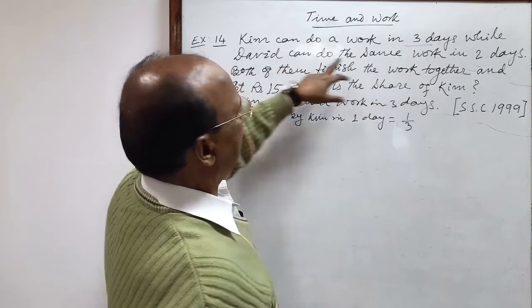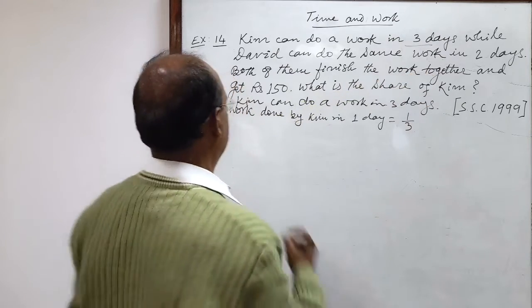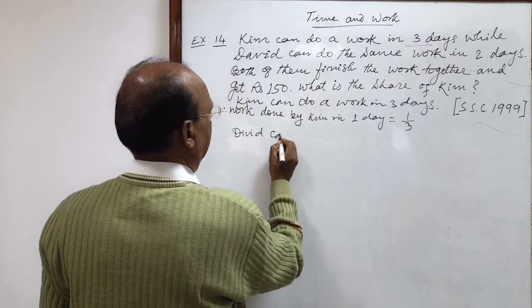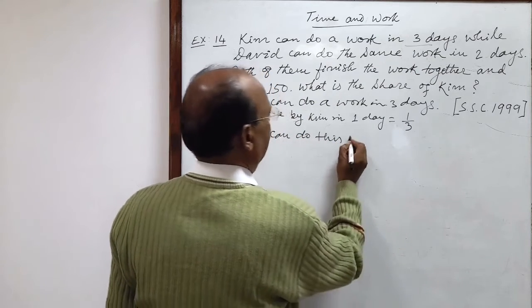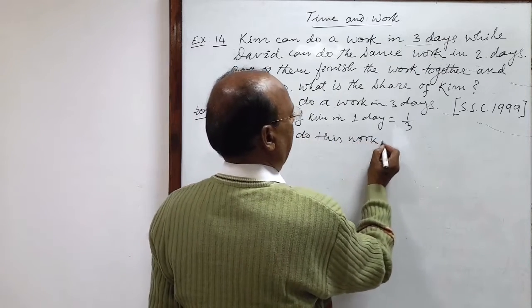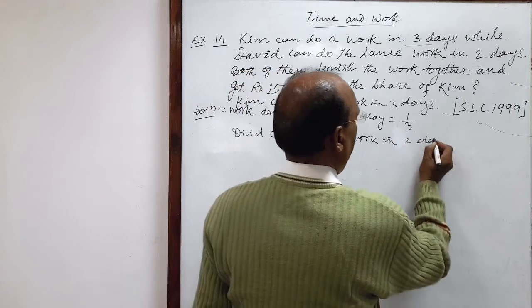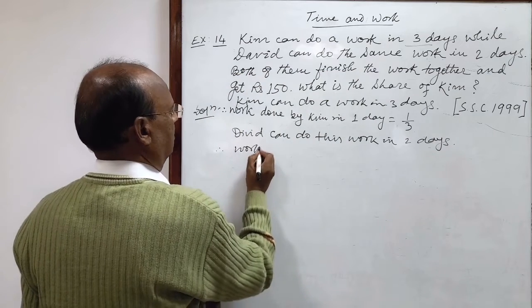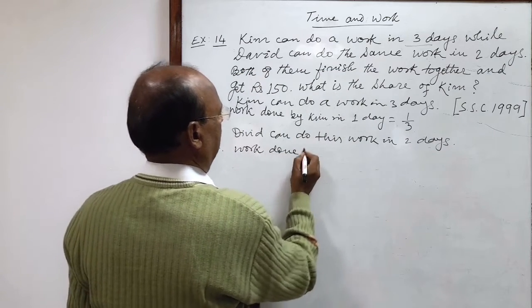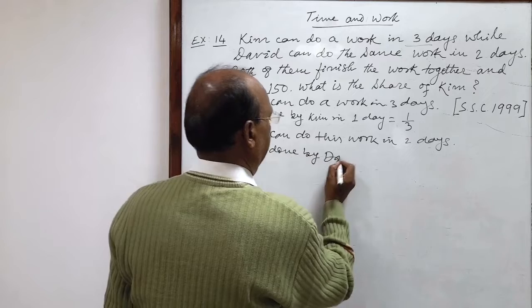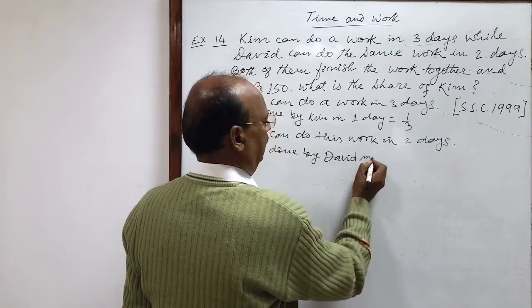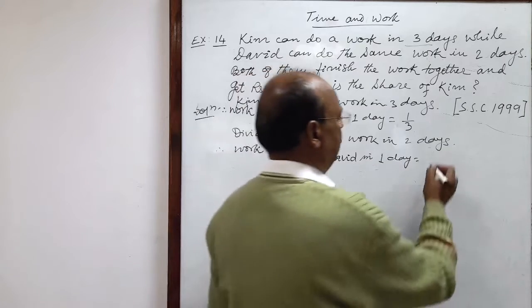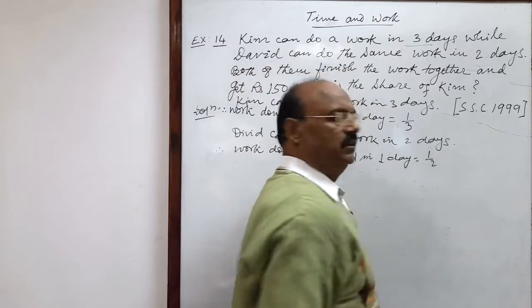Similarly, David can do the same work in two days. Therefore, by unitary method, work done by David in one day will be one by two (1/2).